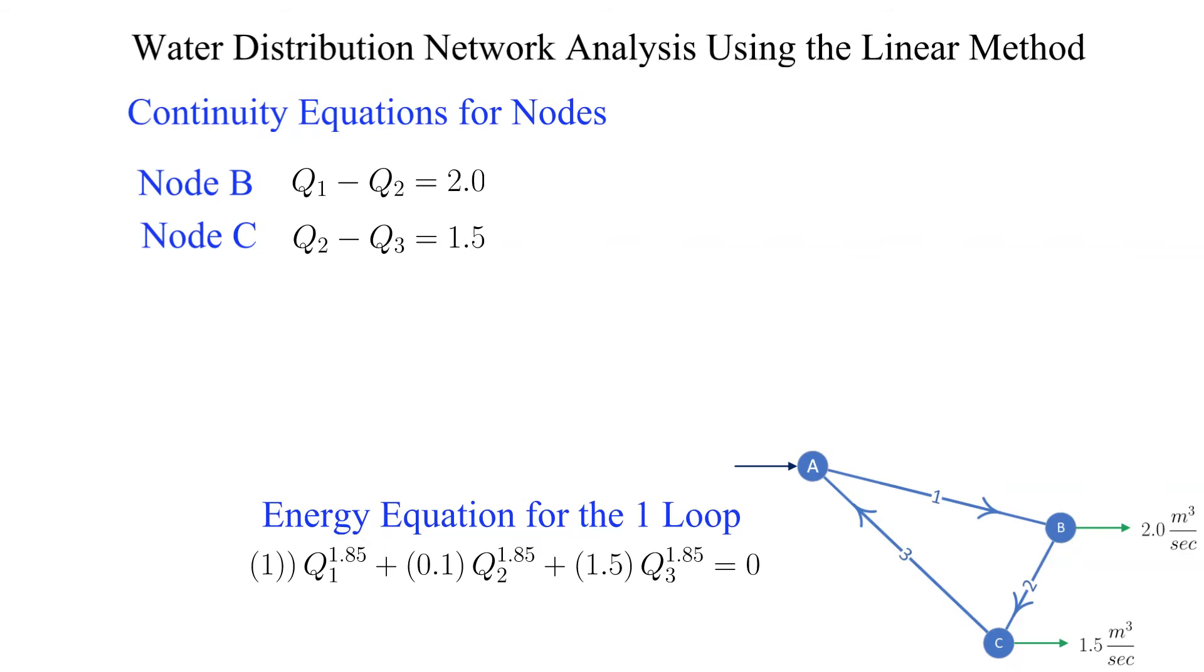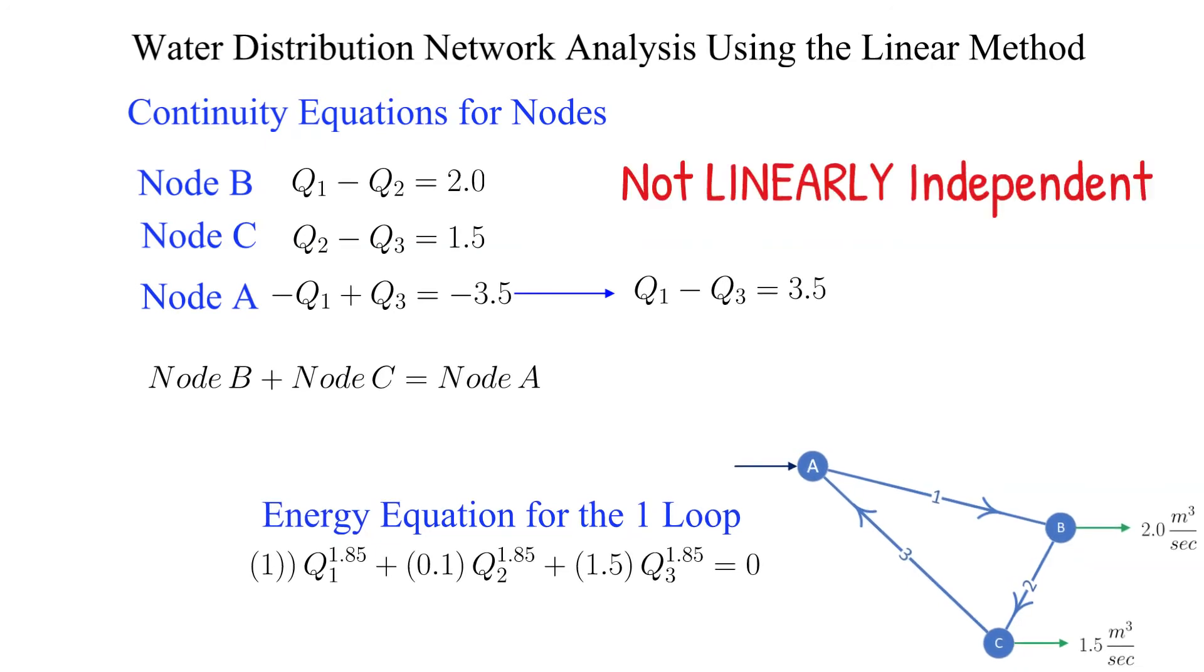Node A clearly must have a supply of 3.5 and we can write down that equation. We now have three nodes and one energy loop equation for three unknowns. Clearly that is a problem. On careful inspection we can see that the continuity equation for node A is a linear combination of the equations for node B and C. It is not linearly independent and we will not be using that equation.